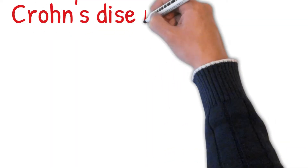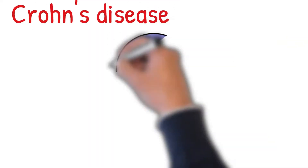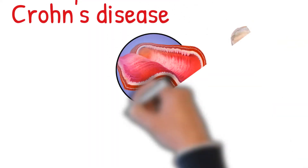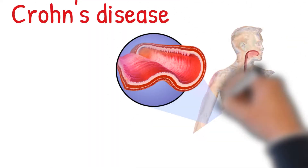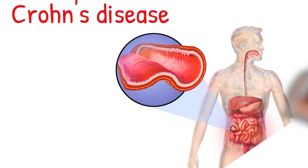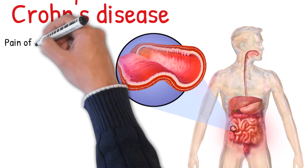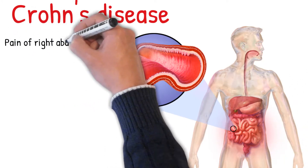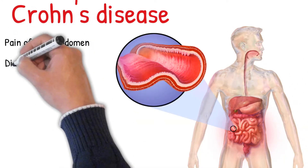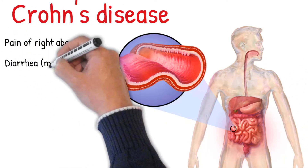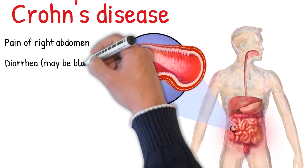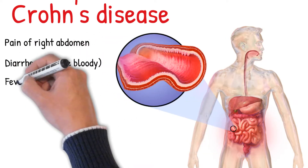Crohn's disease is a type of inflammatory disease of the gastrointestinal tract. Symptoms include pain of the right abdomen, which is a common initial symptom, diarrhea which may be bloody, fever, abdominal distension, and weight loss.